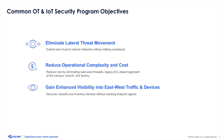To begin, it's important to set a foundation with a lot of the common objectives that we see across our customers' OT and IoT security programs. From a risk mitigation standpoint, the very first goal we're looking to achieve is eliminating lateral threat movement if and when a breach occurs. The global number of connected IoT devices is nearly 17 billion today and is expected to surpass 23 billion in the next three years. Zscaler's threat labs found that the overall volume of IoT malware attacks has increased by 45% over just the past year alone. These increases drive home the importance of gaining full visibility into the devices and the traffic occurring within our environments, specifically east-west traffic that is often overlooked. Reducing operational complexity and cost is also another important factor when considering a segmentation approach.